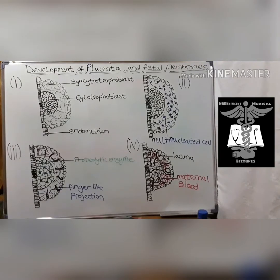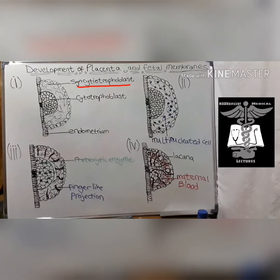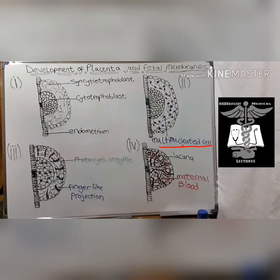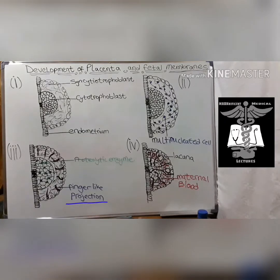The placenta begins development during implantation as the blastocyst adheres to the endometrium of the uterus. The trophoblast differentiates into an inner cytotrophoblast and an outer syncytial trophoblast. The cytotrophoblast proliferates and newly formed cells migrate into the syncytial trophoblast, forming rapidly growing multi-nucleated cells. The cytotrophoblast then secretes proteolytic enzymes while the syncytial trophoblast sends out finger-like projections, allowing the blastocyst to embed into the endometrium.